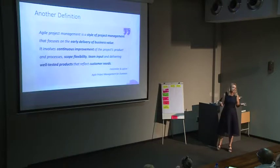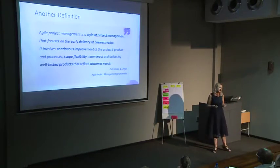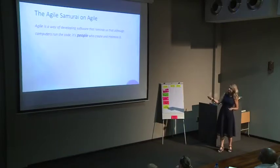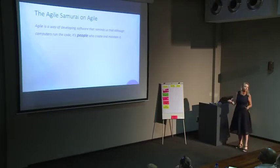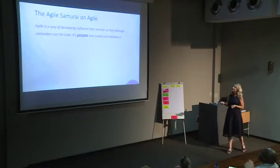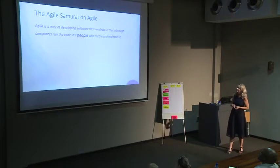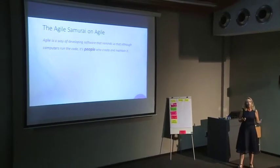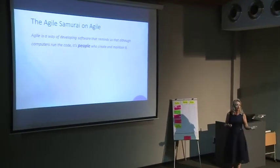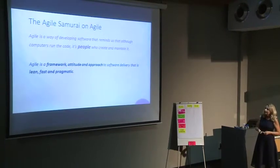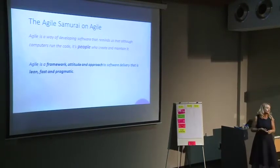Flexibility is also key — sometimes the business has new needs or launches a new product and all of a sudden needs something different than two weeks ago. Agile is a way of developing software that reminds us that although computers run the code, it's people who create and maintain it. It's a behavioral thing — the way you operate and manage your people. It's not just about sticking to processes and policies. Agile is a framework, attitude, and approach to software delivery that is lean, fast, and pragmatic. And Agile is no silver bullet — you can't fix everything with it.